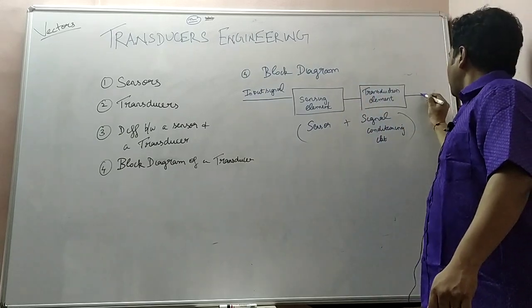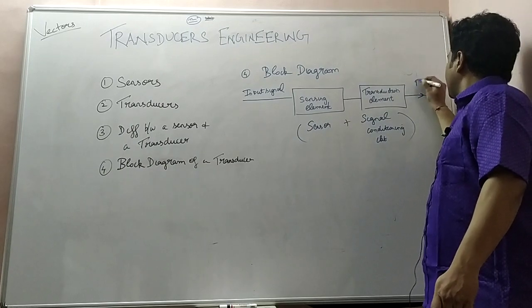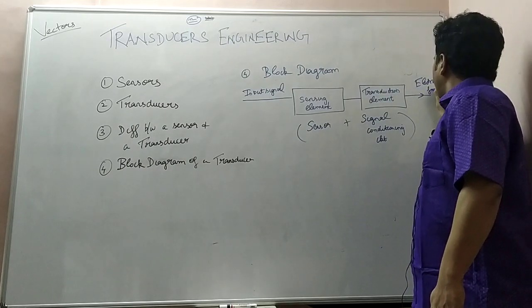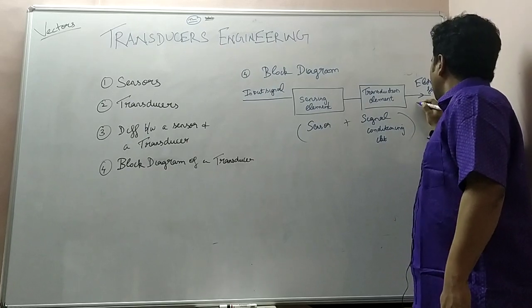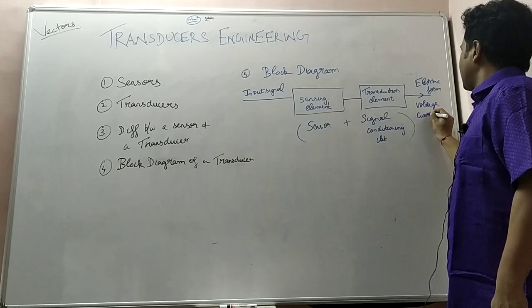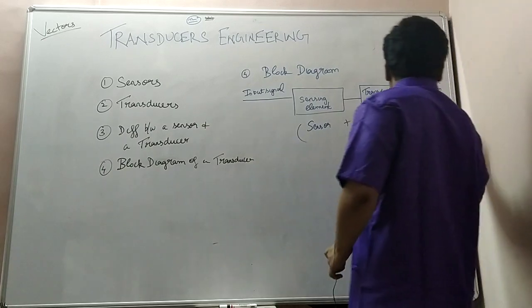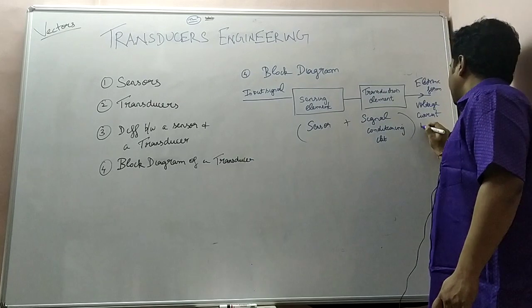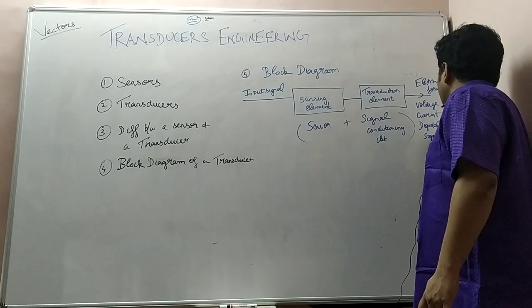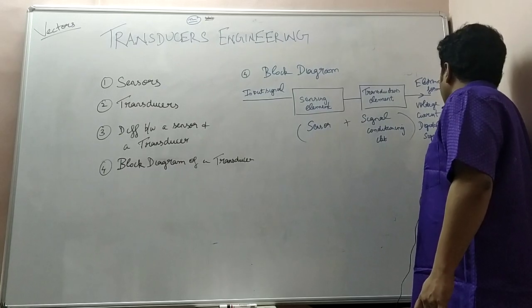We get the output voltage in electronic form. That may be voltage, that may be current, that may be in terms of digital signal, ones and zeros.